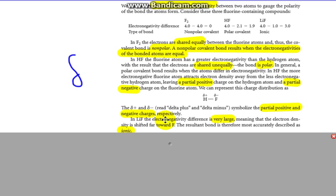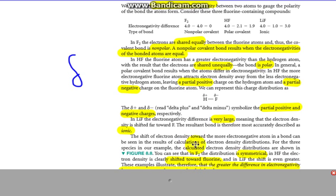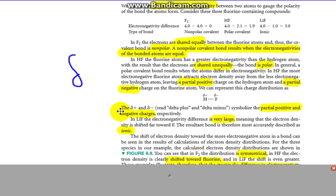In LiF, the electronegativity difference is very large, meaning that the electron density is completely shifted towards F. The resulting bond is therefore more accurately described as ionic. The shift in electron density towards the more electronegative atom in a bond can be seen in the results of calculations of electron density distributions for three species in our example. The calculated electron density distributions are shown down below in the figure, and we'll look at that in the next video.